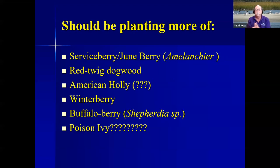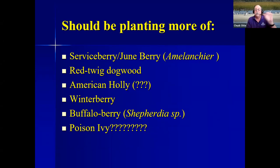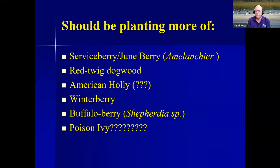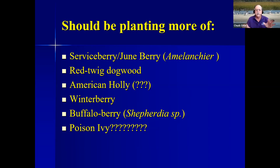Things we should be planting more of: serviceberry and Juneberry, red twig dogwood — a good accent plant next to the house with great red color in winter — American holly, winterberry, and buffaloberry. Poison ivy is also worth mentioning: don't go to a nursery asking for it, but it is native, a survivor, and has white berries that wildlife love. If you've got some in a back corner of a larger lot where nobody will come in contact with it, leave it alone. It can even stabilize an eroding slope.